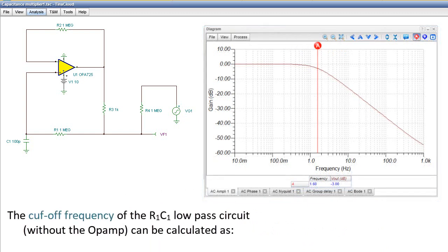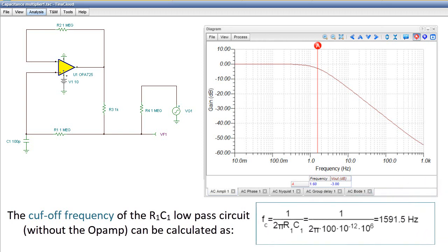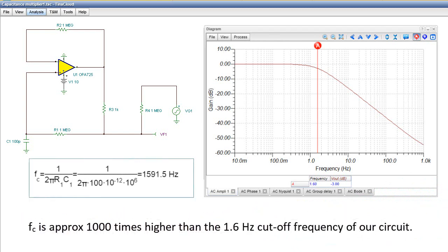The cutoff frequency of the R1C1 low-pass circuit, without the op-amp, can be calculated as Fc equals 1 over R1 times C1 times 2 times π equals 1591.5 Hz. Fc is approximately 1,000 times higher than the 1.6 Hz cutoff frequency of our circuit.